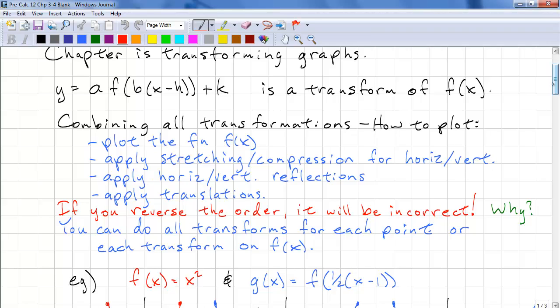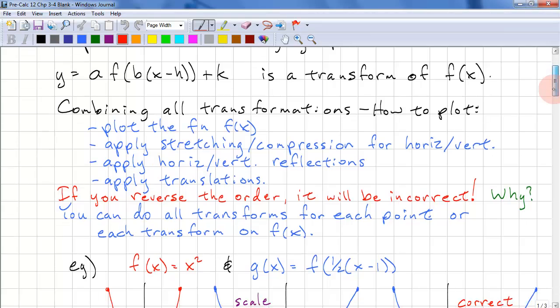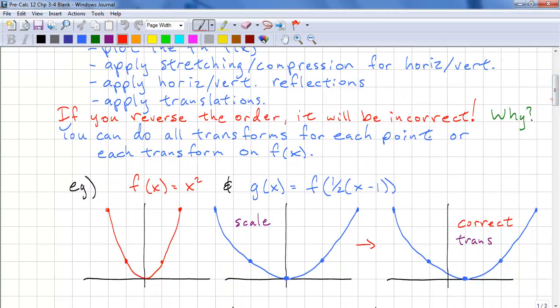If you reverse the order and do translations first, your graph will be incorrect. The other option that you can do is do all the transformations for each point and then connect the curves. Let's look at an example.